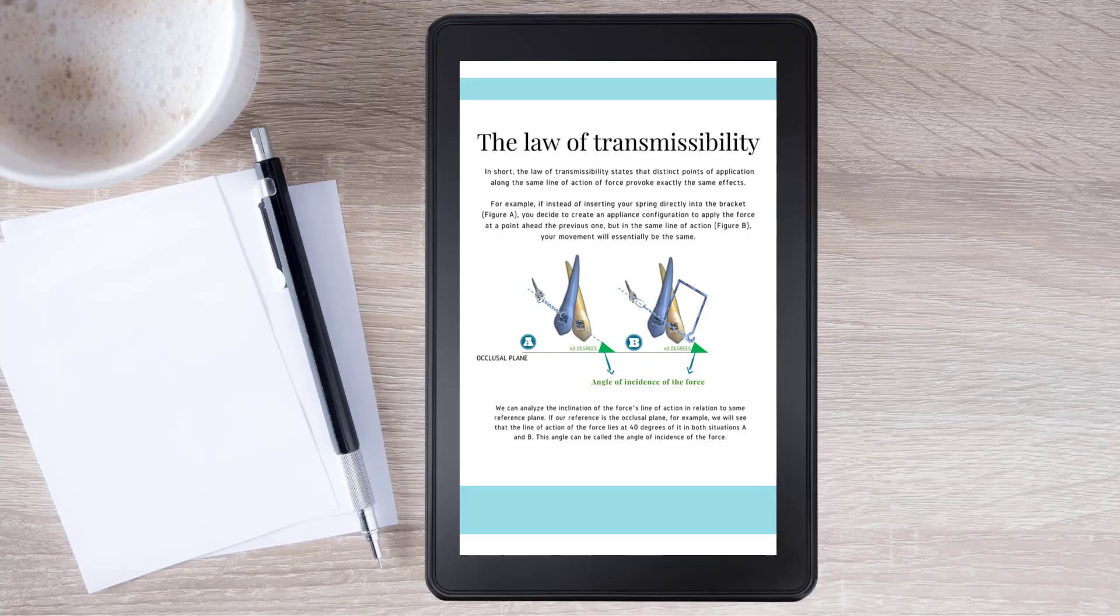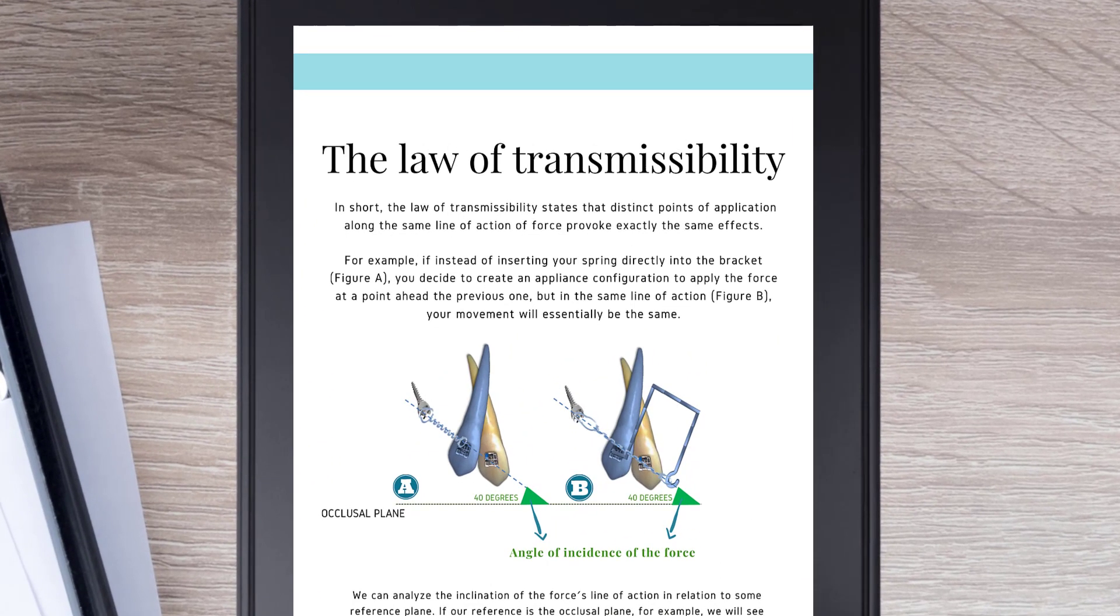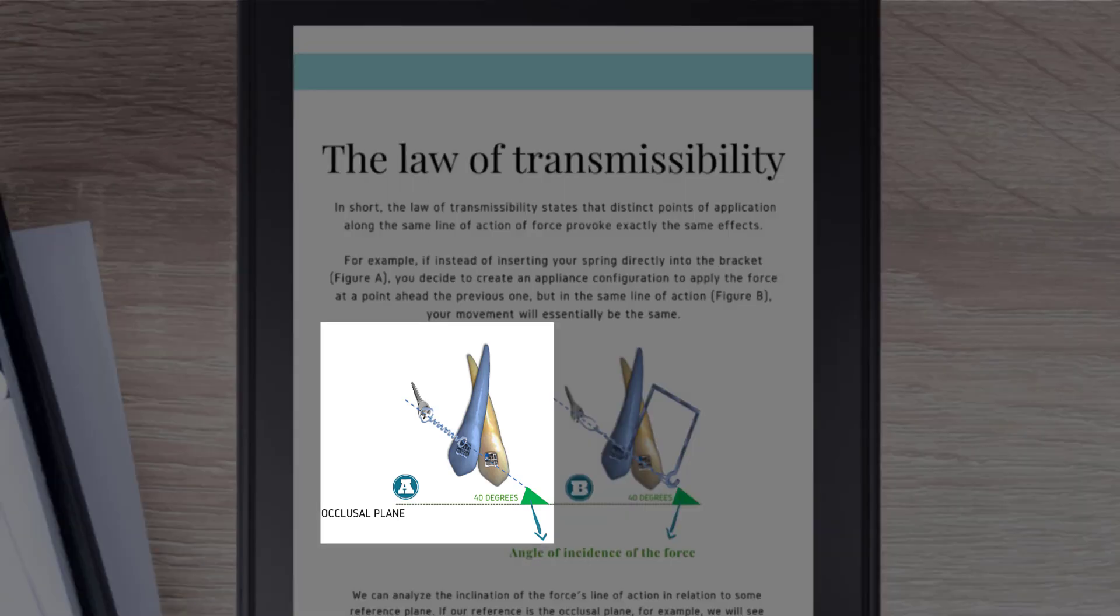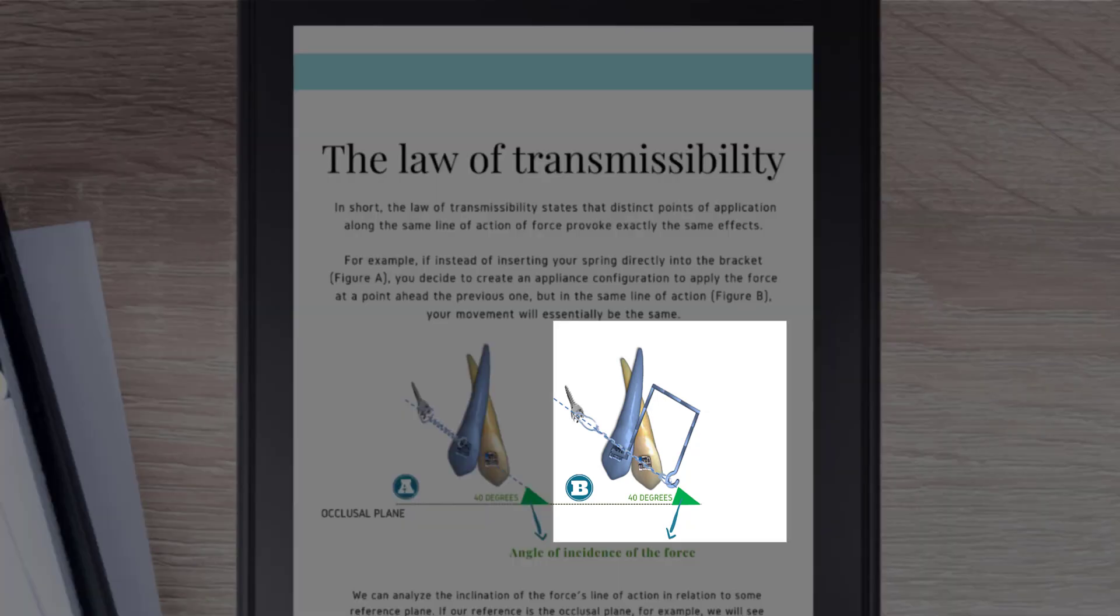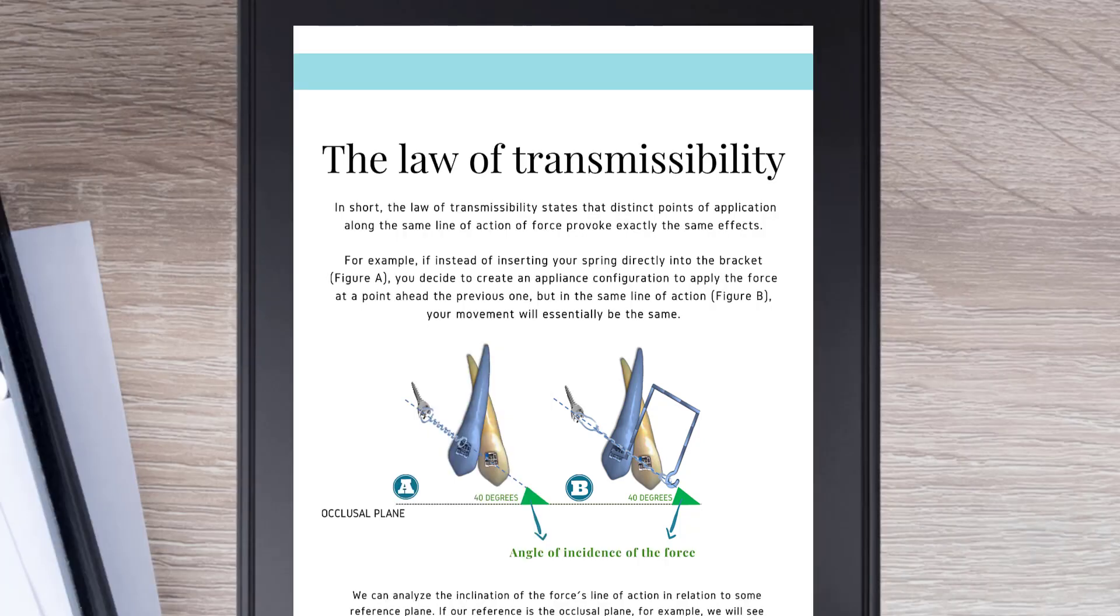The law of transmissibility. In short, the law of transmissibility states that distinct points of application along the same line of action of force provoke exactly the same effects. For example, if instead of inserting your spring directly into the bracket, figure A, you decide to create an appliance configuration to apply the force at a point ahead the previous one, but in the same line of action, as in figure B. Your movement will essentially be the same.